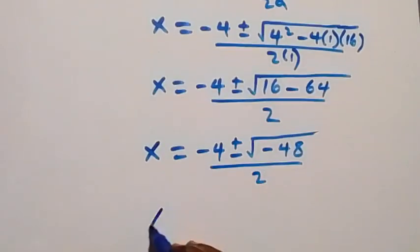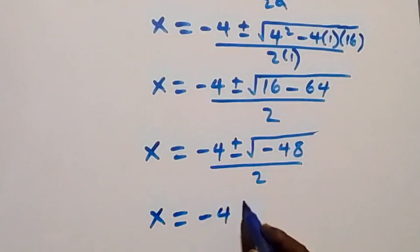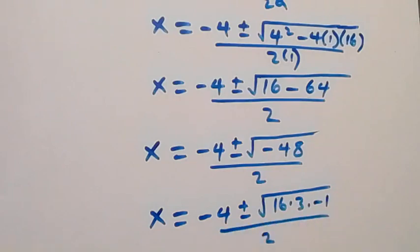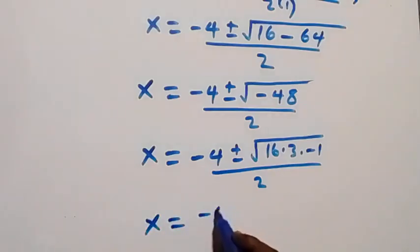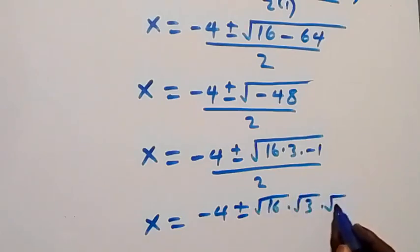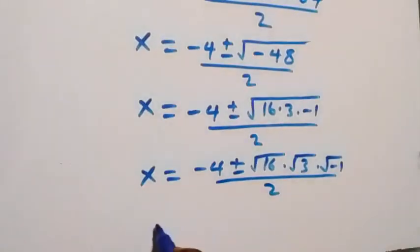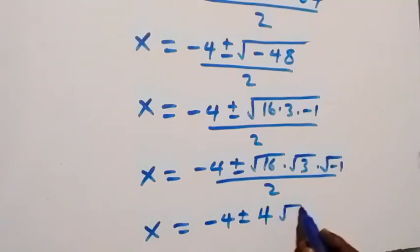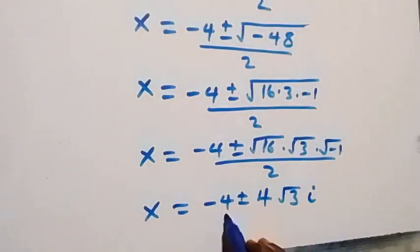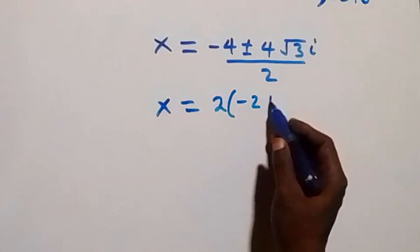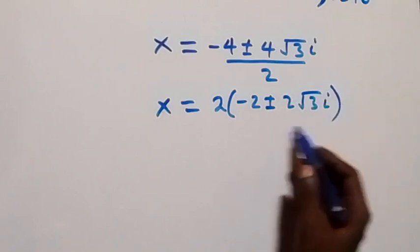We can write negative 48 as 16 times 3 times negative 1. Separating the roots gives us the square root of 16 times the square root of 3 times the square root of negative 1, which is 4 times root 3 times i. Factoring out 2 from numerator and denominator, we get x equals negative 2 plus or minus 2 root 3 times i.